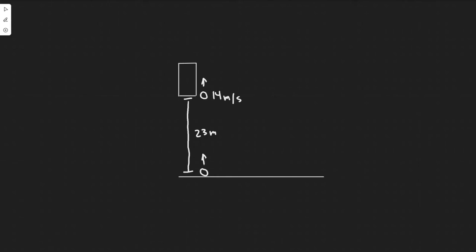In this problem, we're told a baseball is seen to pass upward by a window 23 meters above the street with a vertical speed of 14 meters per second. If the ball was thrown from the street: A, what was its initial speed? B, what altitude does it reach? C, when was it thrown? And D, when does it reach the street again?